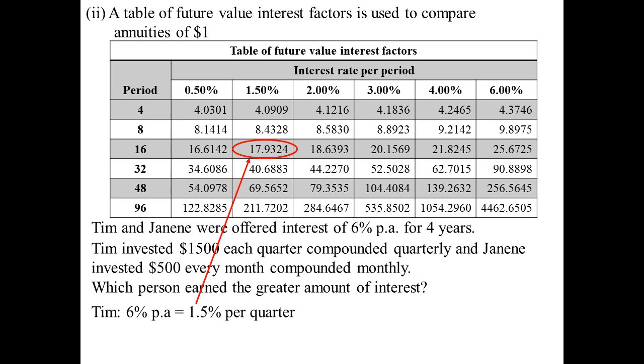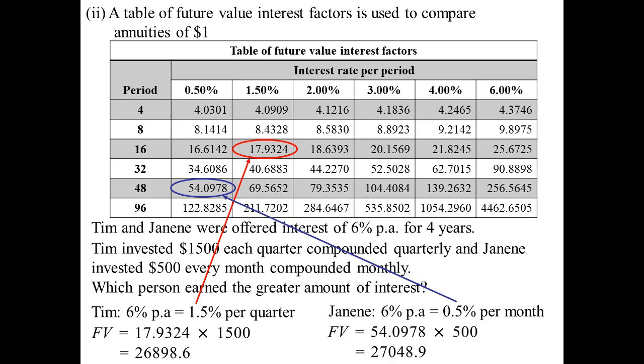Well, we invested the $1,500 here. So I get $26,898 as the future value. So Janene, she did 6% per annum. That would be half a percent per month, but it would be 48 months. So that would get us 54.0978, reading off the table, per dollar. But she's investing $500 each month. So we'd end up with $27,000. So Janene gets more.